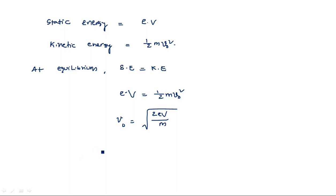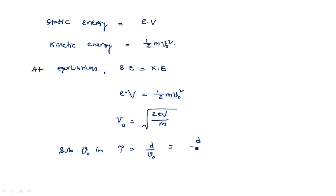Substituting v₀ into the transit time formula: τ = d / v₀ = d / √(2eV/m).